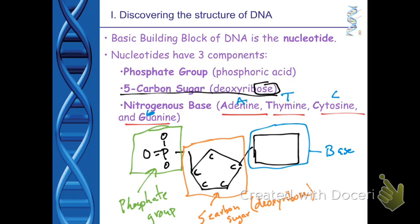When you look at the double helix and imagine it like a ladder or rungs, we're looking at one half of those steps. Each step is made up of two nucleotides. So let's look at what it looks like when we put it all together.